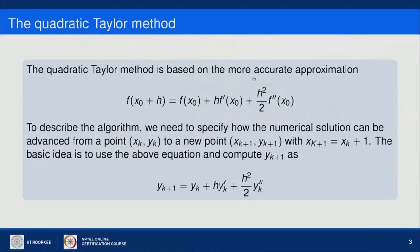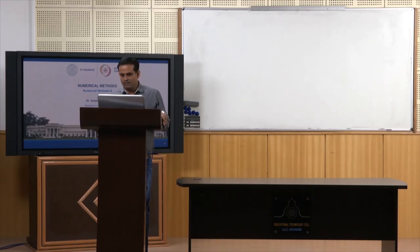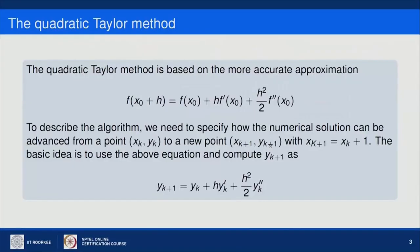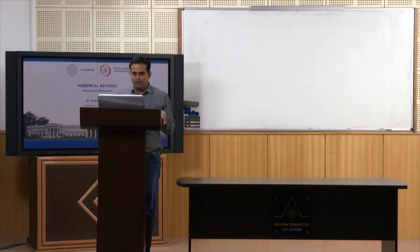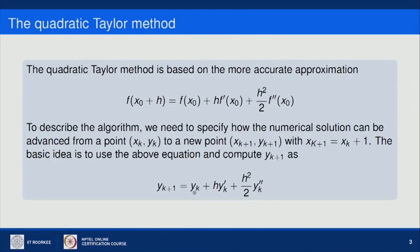The quadratic Taylor method is based on a more accurate approximation up to the second order derivative, unlike Euler's method which takes only up to the first order derivative. A function f can be approximated about a point x₀ by: f(x₀) + h·f'(x₀) + (h²/2)·f''(x₀). To advance the numerical solution from point (x_k, y_k) to (x_{k+1}, y_{k+1}) where x_{k+1} = x_k + h, we use this Taylor expansion to compute y_{k+1} = y_k + h·y'_k + (h²/2)·y''_k.